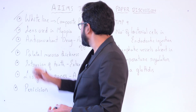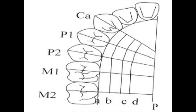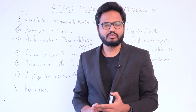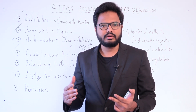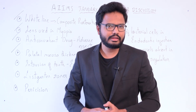Regarding palatal mucosa thickness: the thickness increases from canine to second molar areas, and in sites farther away from the gingival margin. An exception is the first molar area (line C), which has significantly thinner mucosa, possibly due to the presence of the palatal root of the first molar. Maximum mucosal thickness corresponds to line D of the second molar.